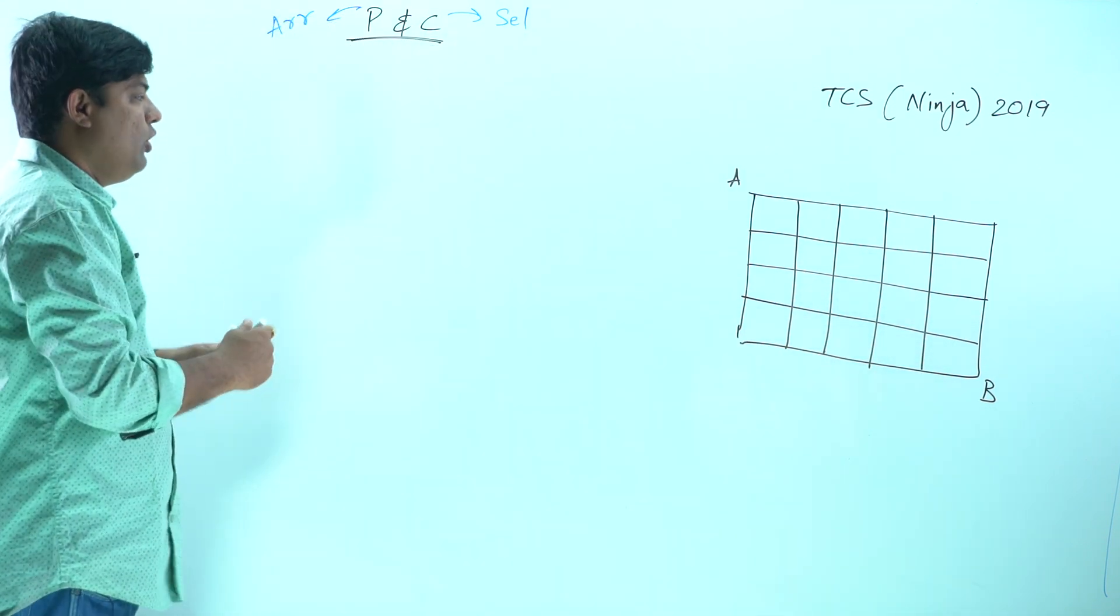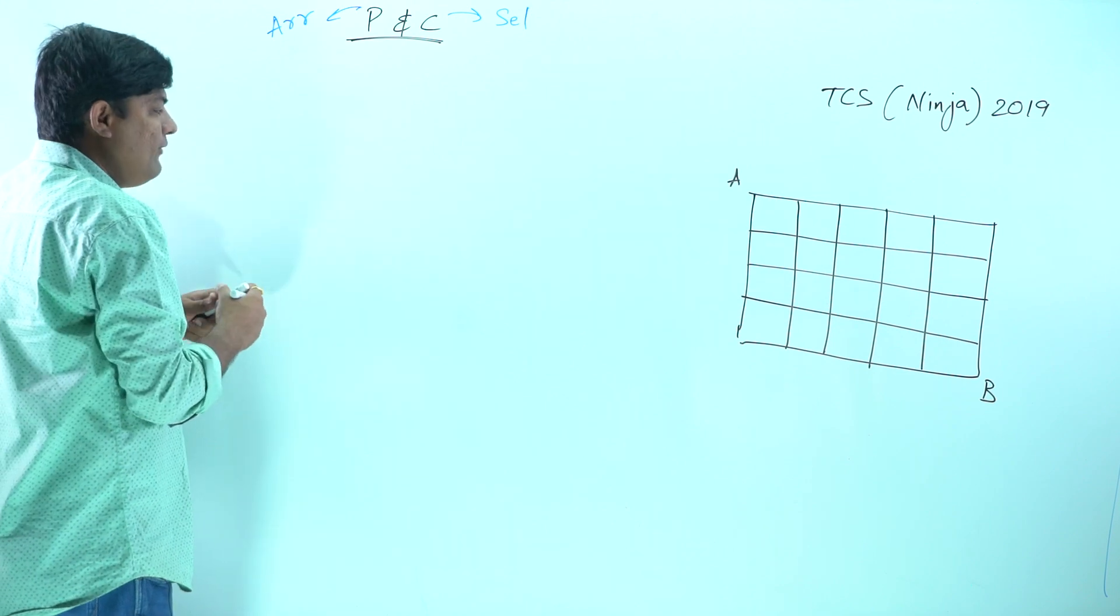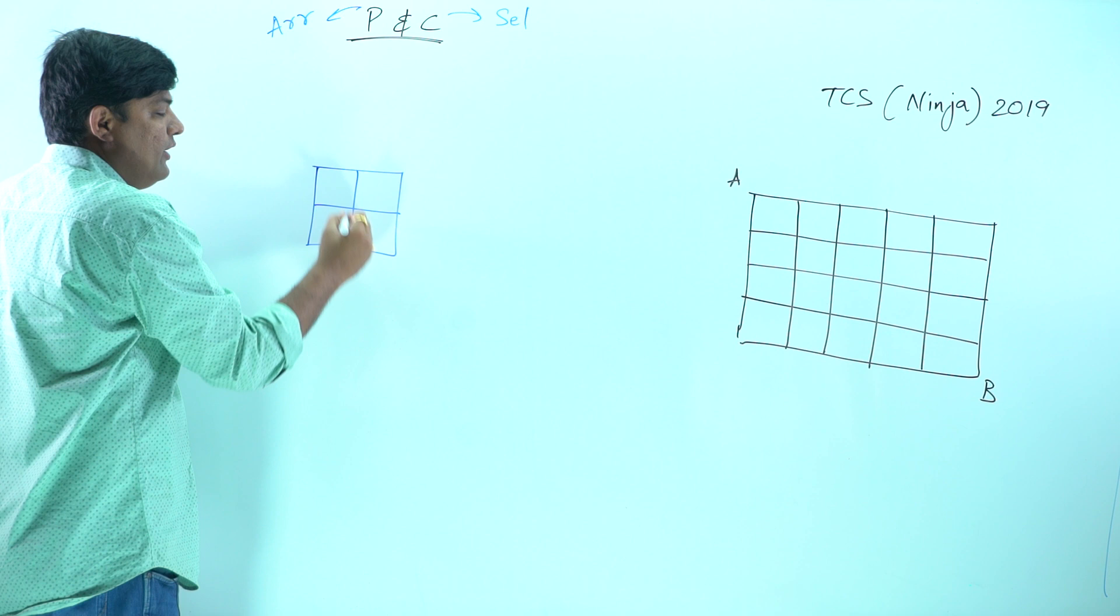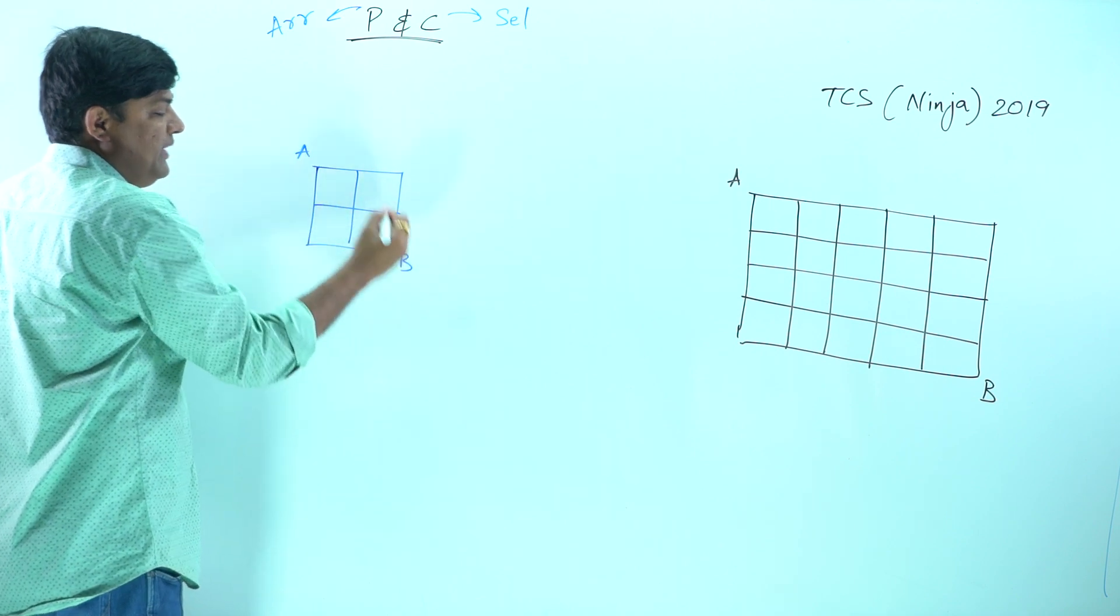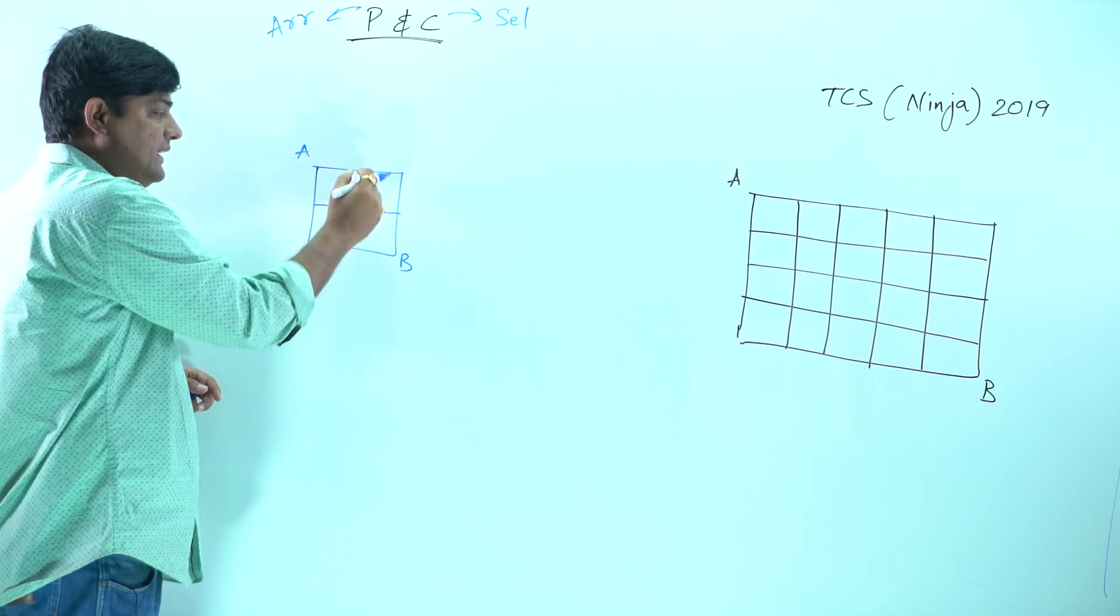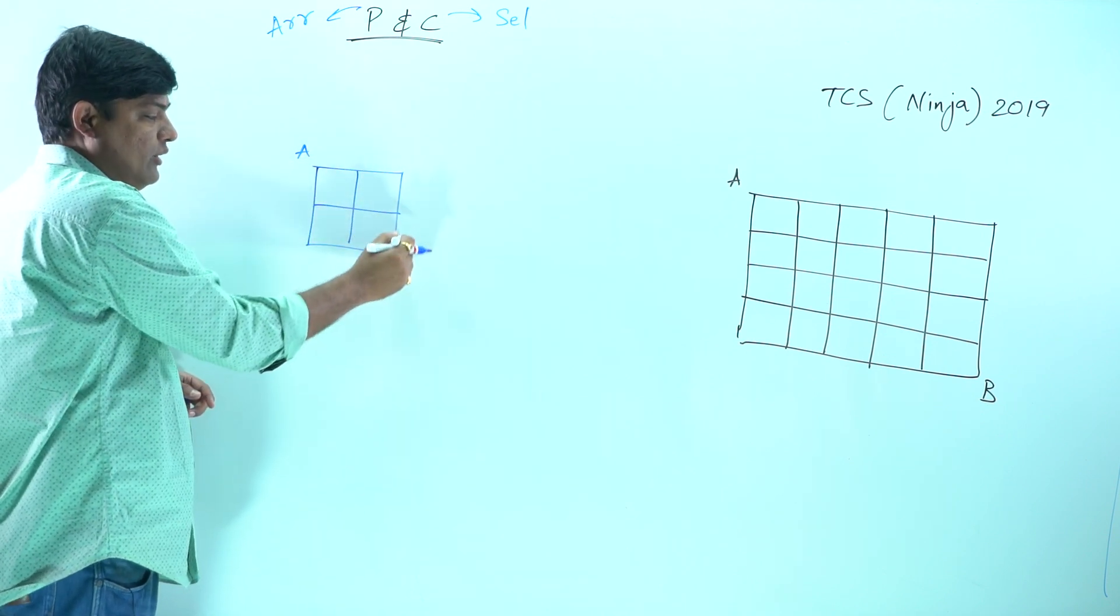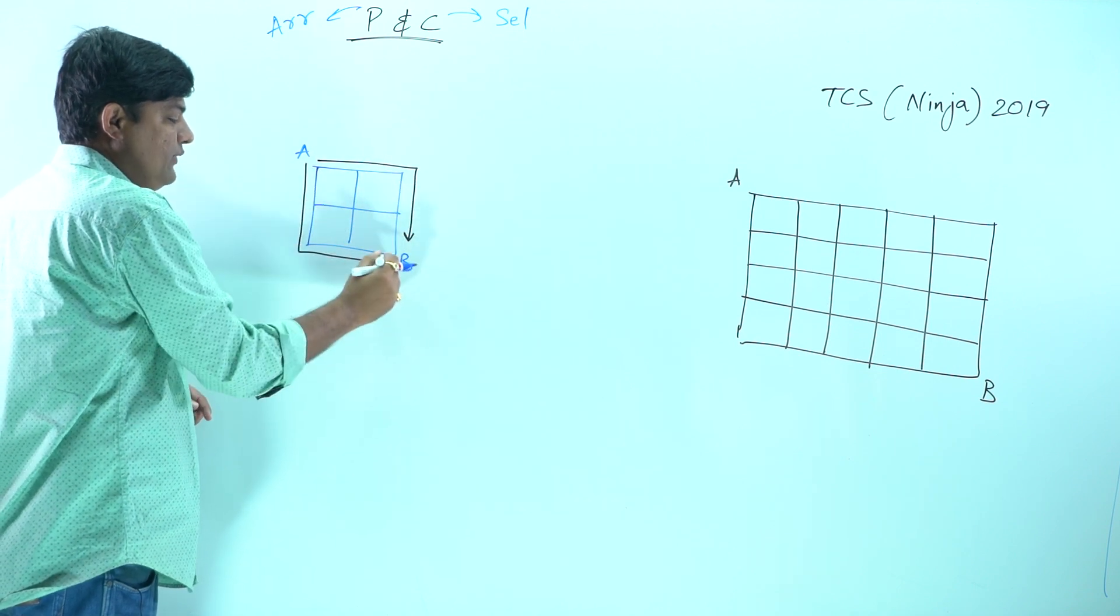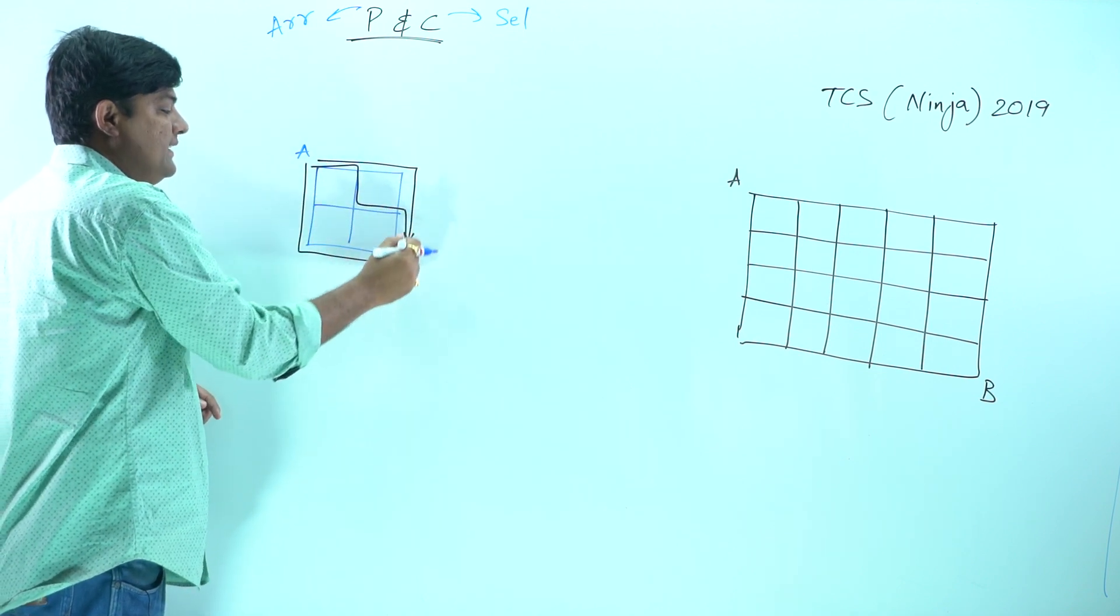Let's have a very simple method. Here we have got a grid of 2 by 2. This is A and this is B. To find out the shortest path, we know this is not the shortest path, the longest one. The shortest one comes here: 1, this is 2, this is the third one, this is the fourth one.